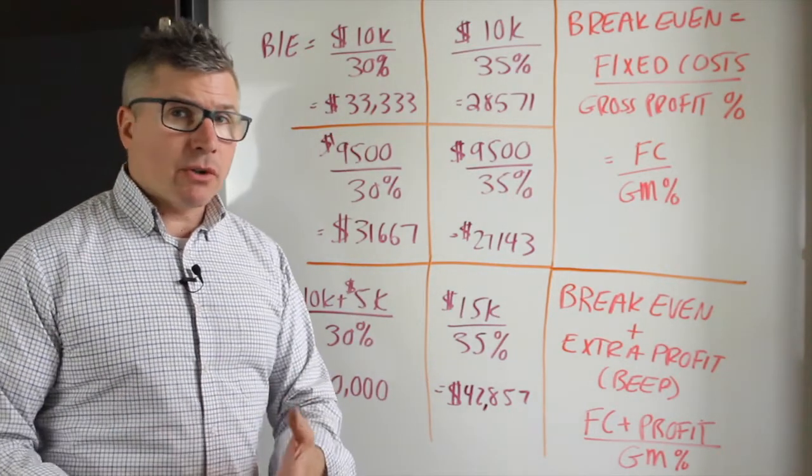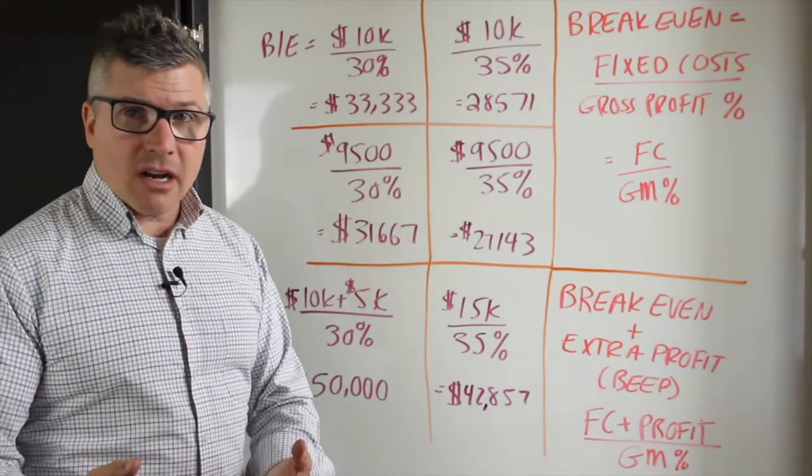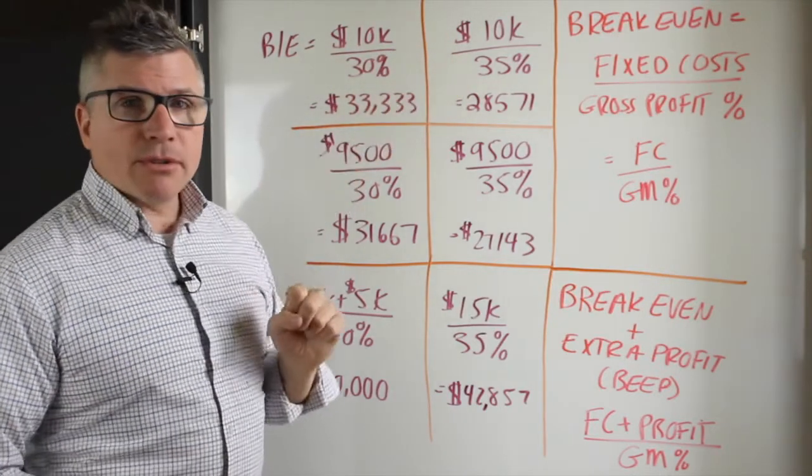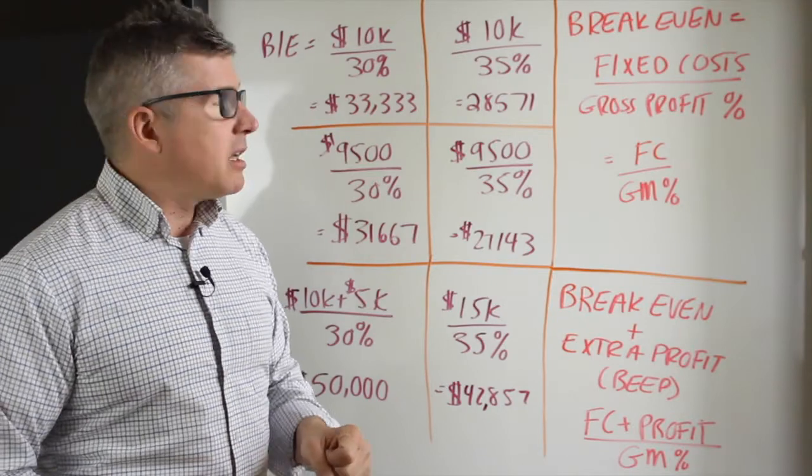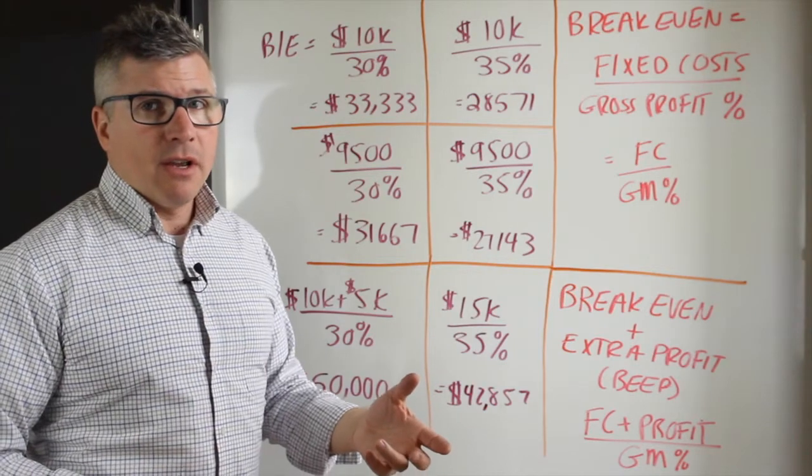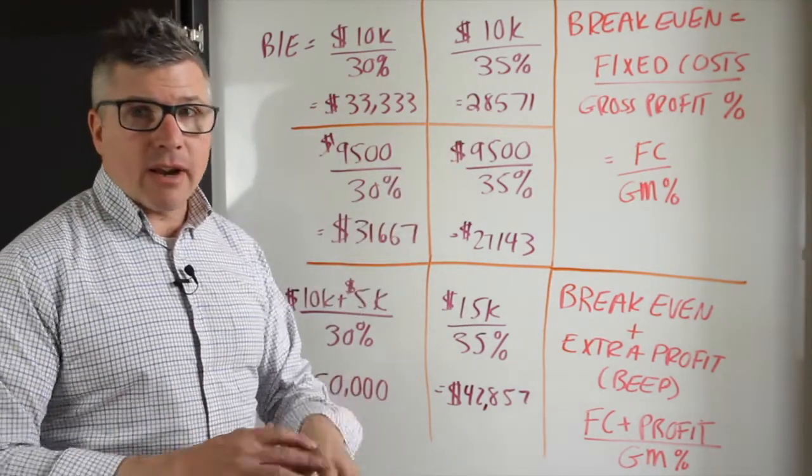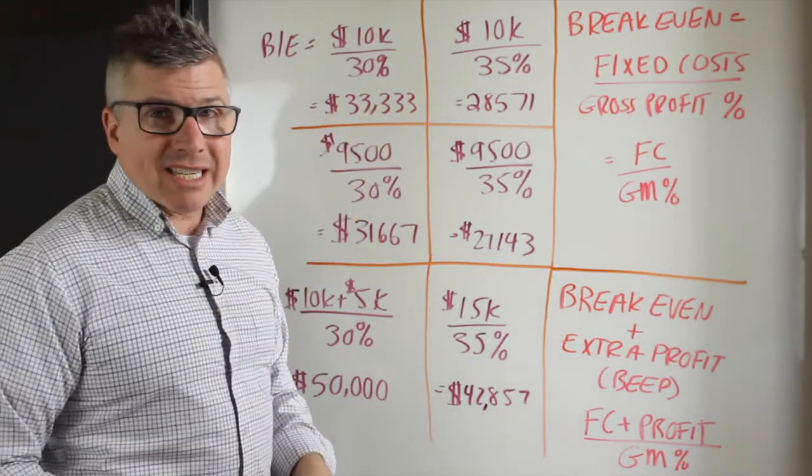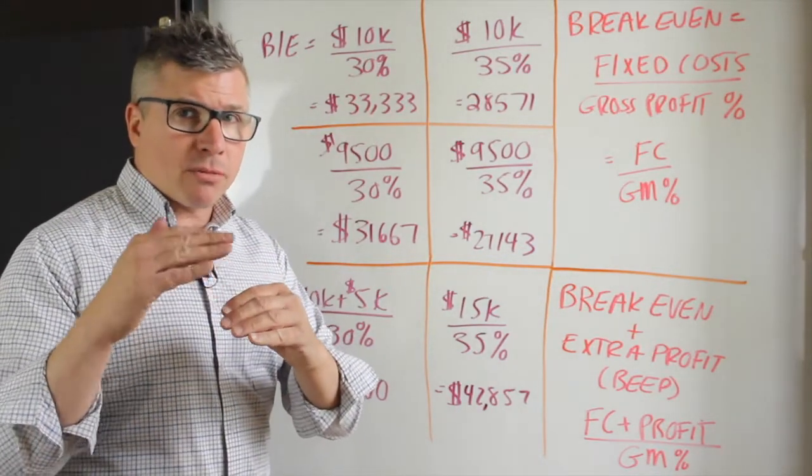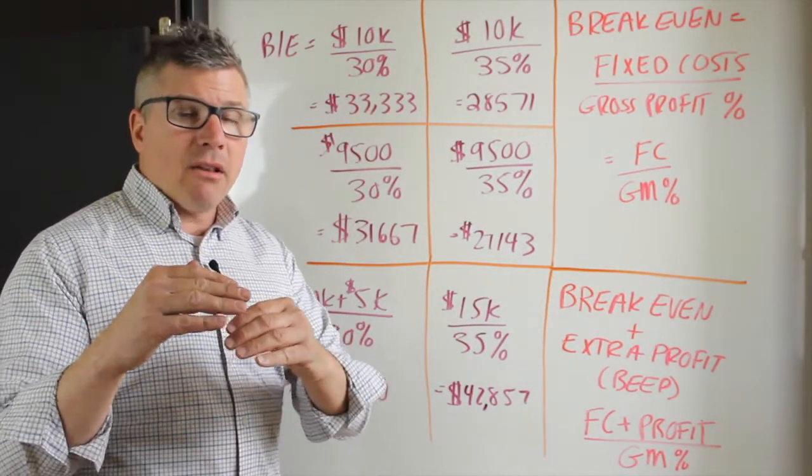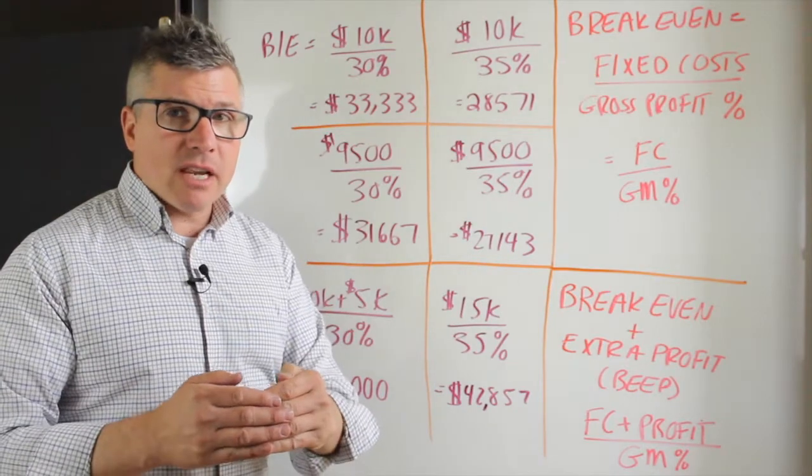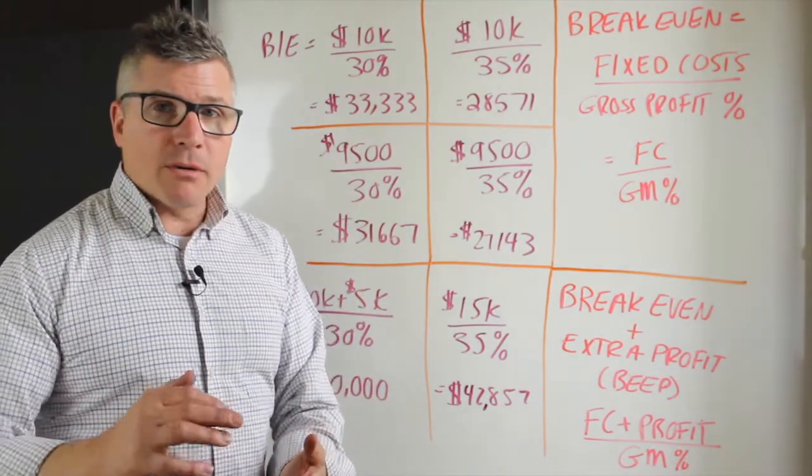So let's see what happens if we change our gross profit margin or if we change our fixed costs. We'll keep our fixed costs the same at $10,000, but what if you're able to increase your gross profit margin to 35%? Now all we need to do is sell $28,571 worth of sales at 35% to net out our $10,000 to break even. So that's a difference of about $4,700. Just an increase from 30 to 35% in your gross profit margin percentage means you only have to sell $4,700 less in order to break even. That's a substantial amount of savings or sales that you don't need to make.